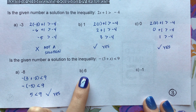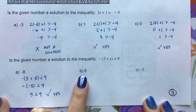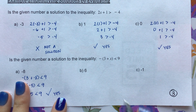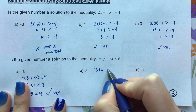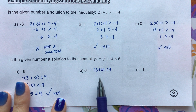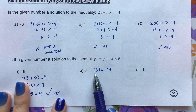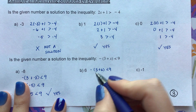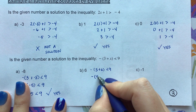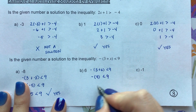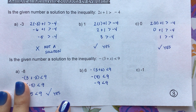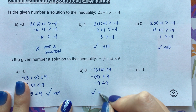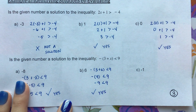For letter B, the value is 6. Substituting in: negative of (3 plus 6) is less than 9. Taking care of what's inside the parentheses first, 3 plus 6 is 9, so we have negative of 9 is less than 9. Is negative 9 less than 9? Yes it is, so this is also a solution.